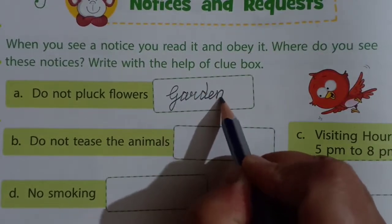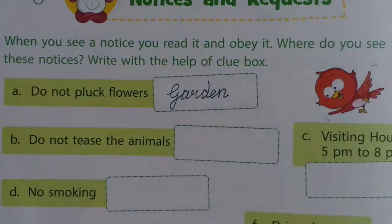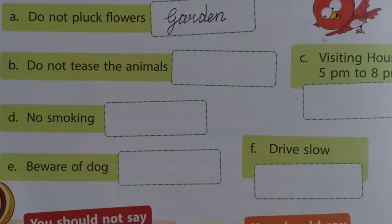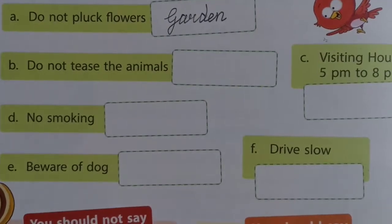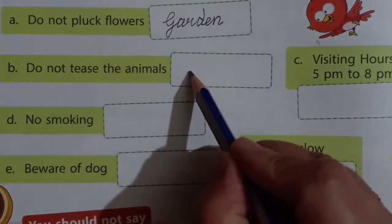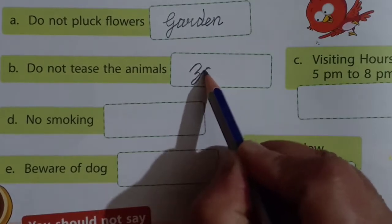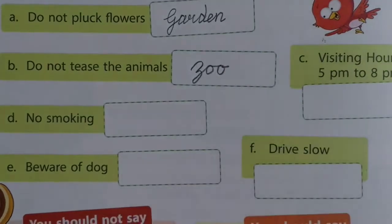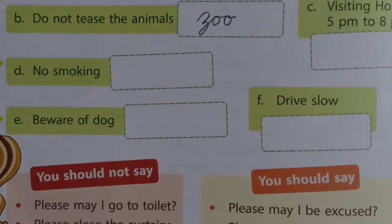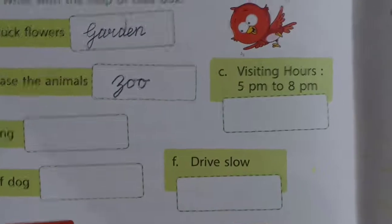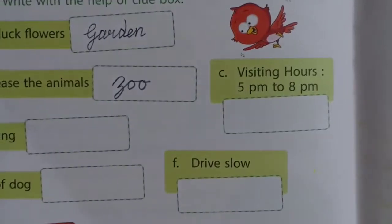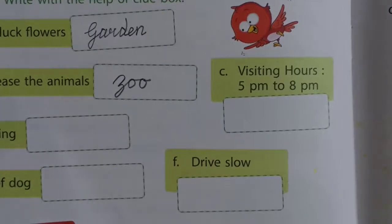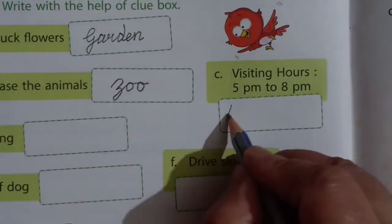We should not pluck flowers. 'Do not tease the animals' — where is it written? We should not tease the animals; it is written in the zoo. C: 'Visiting hours 5 p.m. to 8 p.m.' — where is it written? On the doctor's chamber.